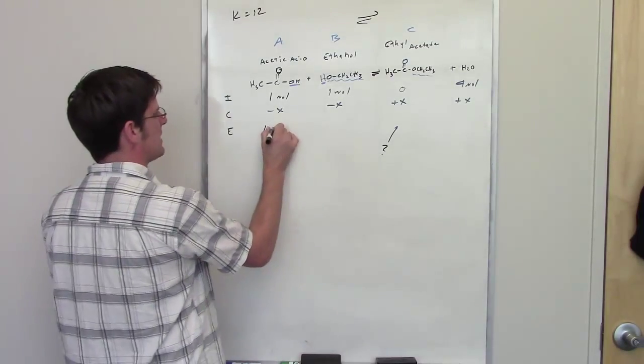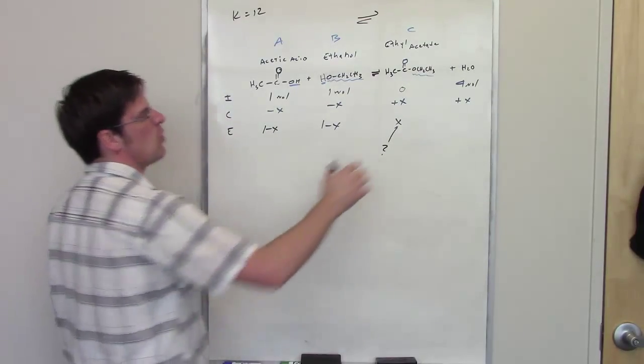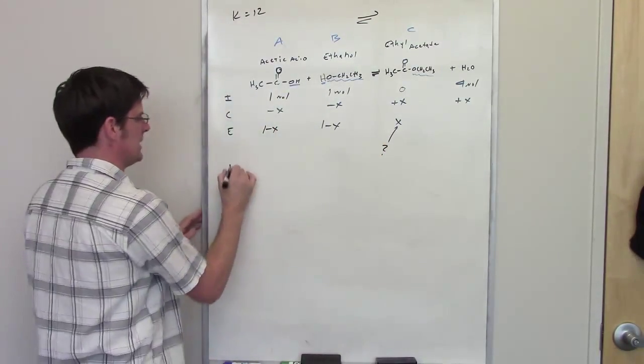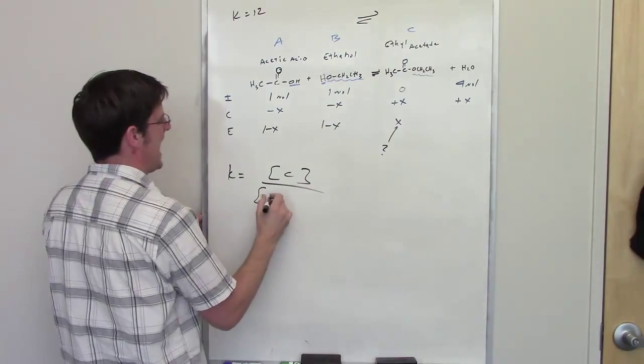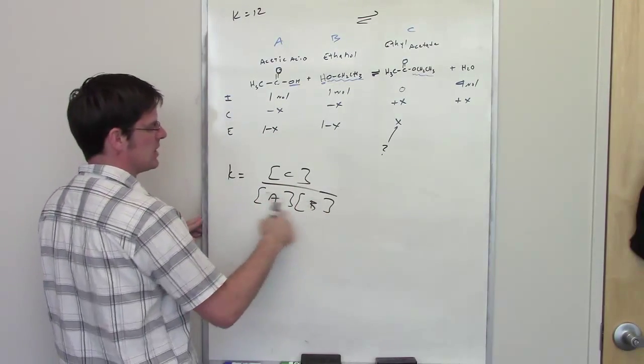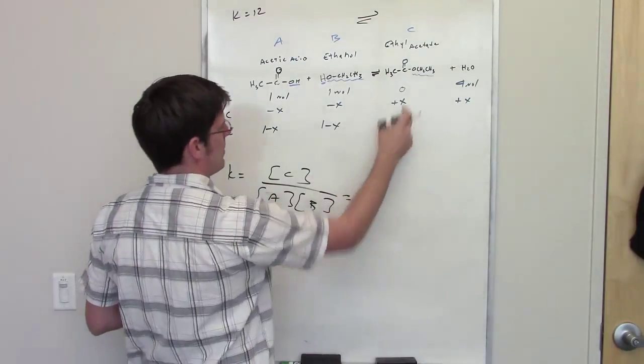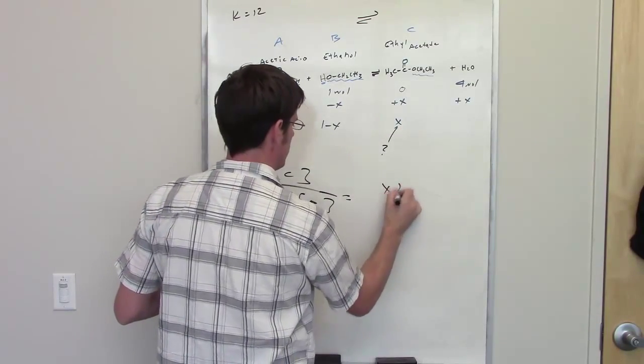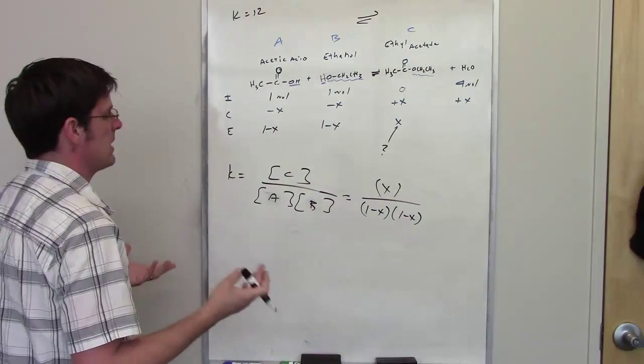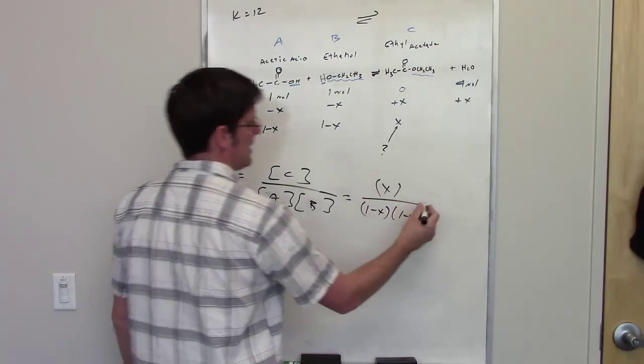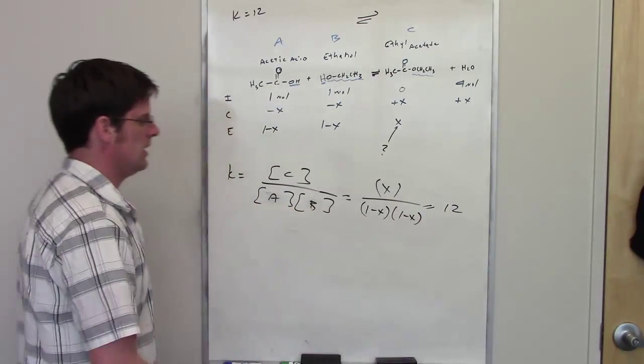So I've got 1 minus x here, I've got 1 minus x here, and I've got 0 plus x right there. Interestingly enough, because the water does not directly participate in the equilibrium expression, so the equilibrium expression is of course the amount of ethyl acetate at equilibrium, divided by A times B in the denominator, water does not factor into the equilibrium expression whatsoever, because it's a liquid. So I'm going to go ahead and throw in my equilibrium amounts. That's going to be x here for C. It's going to be 1 minus x for both A and B. And then I'm going to have to figure out what x is. This is of course going to be equal to the equilibrium rate constant, which we solved in part A as being 12.